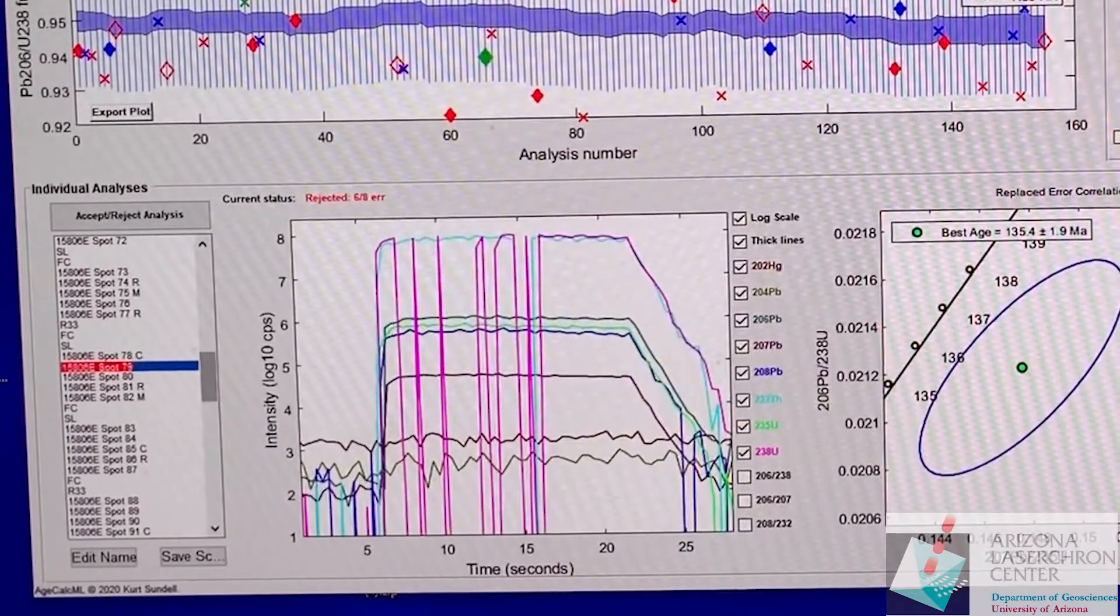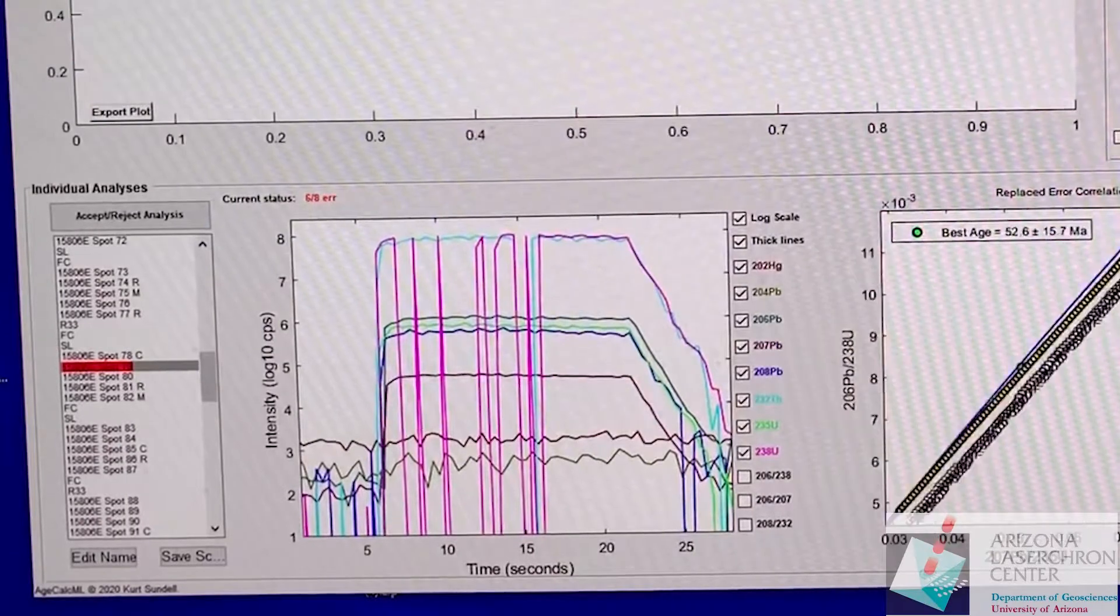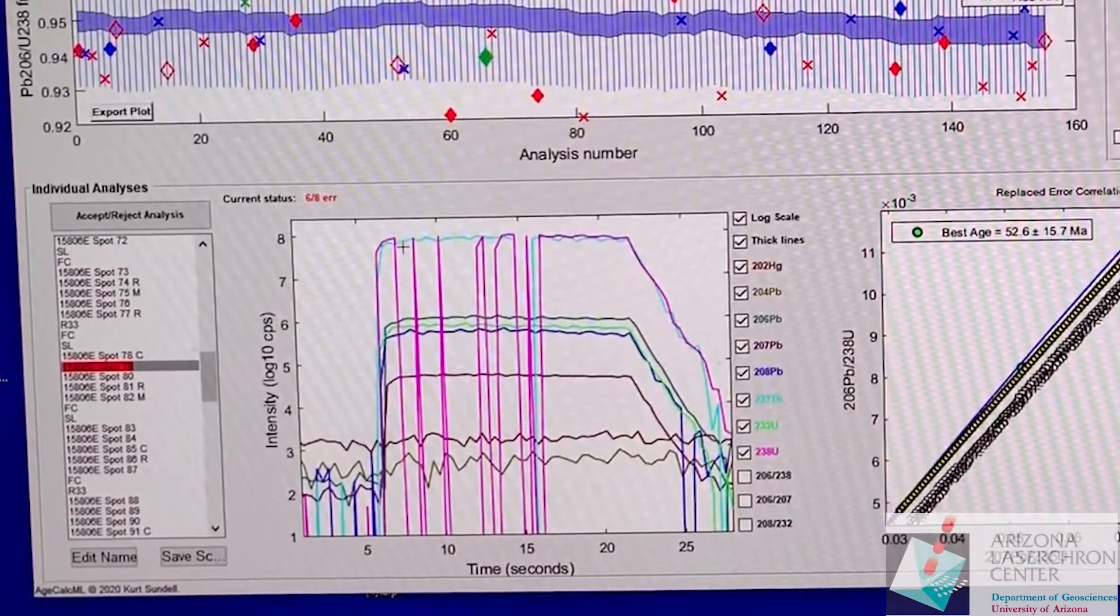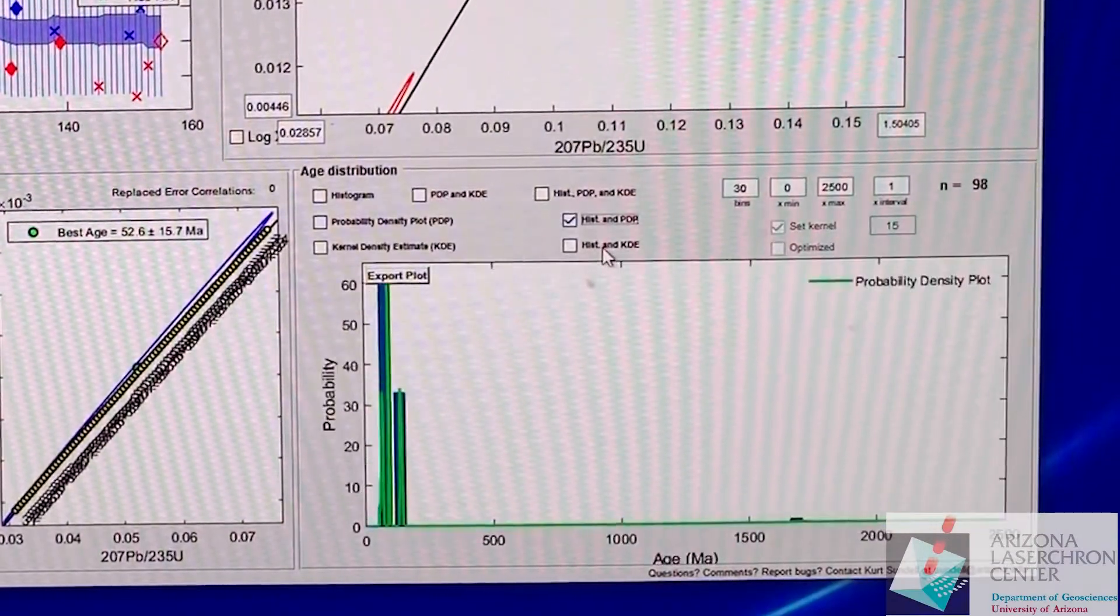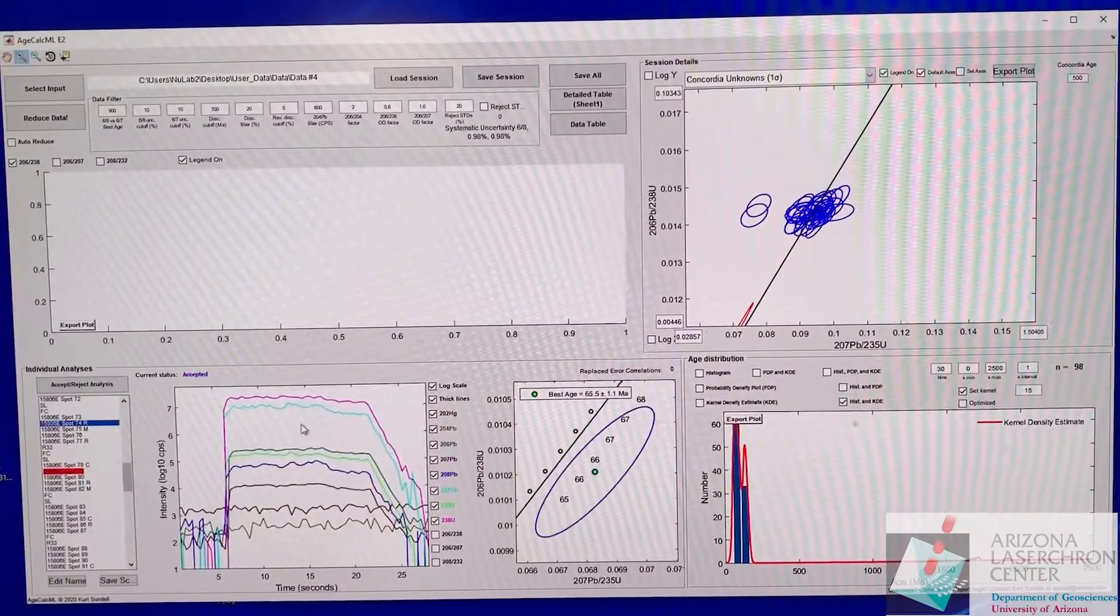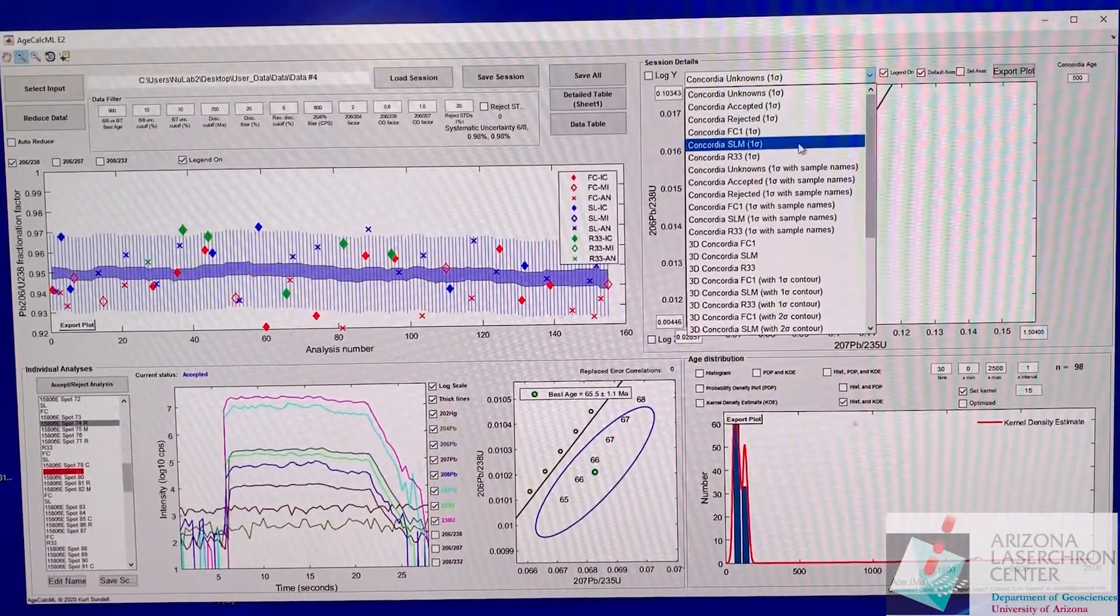You can do a bunch of other things like look at individual analyses. You can reject and accept ones that were rejected or accepted. You can take a look at different, oh that one looks really crazy, so yeah definitely rejected. You could look at different distributions.